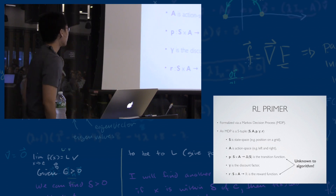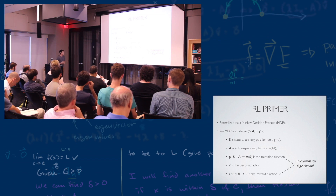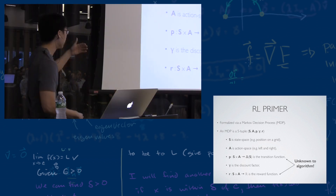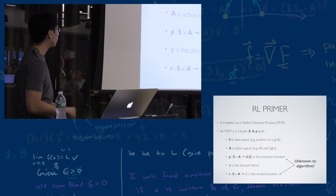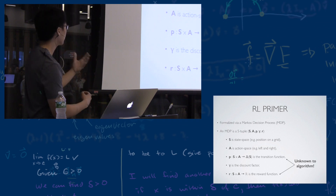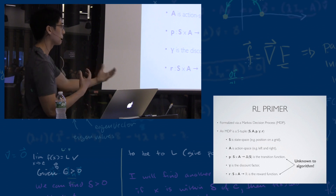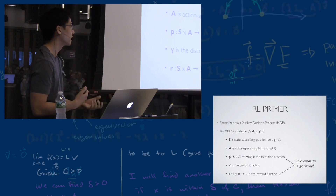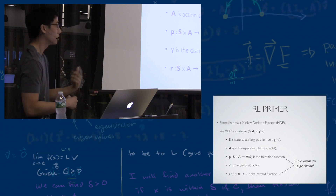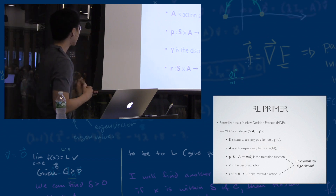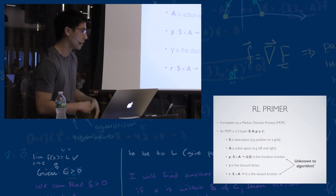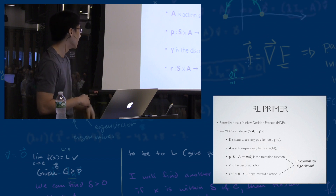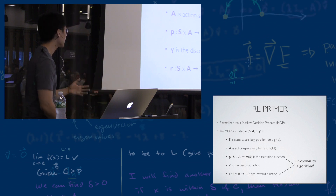Going down to a slightly lower-level view: the object we want to study in RL is a Markov decision process, or MDP. An MDP captures the stochastic nature of the problem with a state transition function and a reward function. The state space could be a position on a grid or an x, y, z coordinate and velocity — from Newtonian physics, position and velocity uniquely determine future outcomes. The action space is the moves the agent can play: going up, down, left, right on a grid, or applying some force in a direction in the real world.